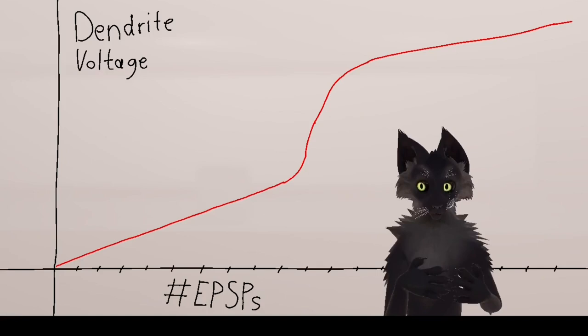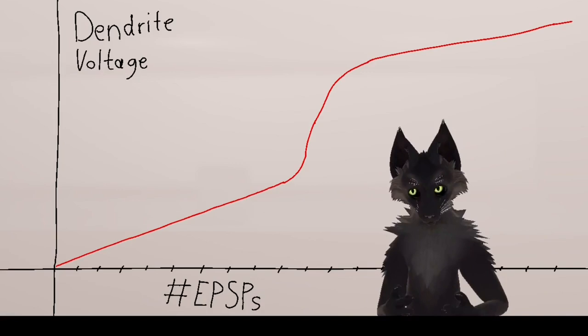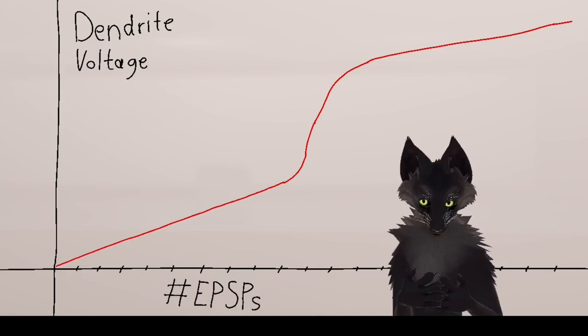And getting back to our quest to understand information processing in the brain, this dendritic non-linearity implements a sort of threshold. Typically, this threshold is at around about 10 active synapses. This is, in fact, another piece of evidence against the grandmother cell hypothesis.